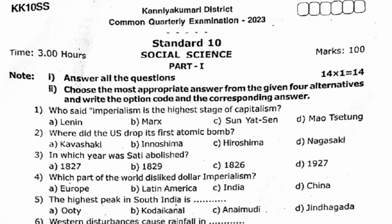Part 1, total of 14 marks. First question: who said imperialism is the highest stage of capitalism? Answer is option A. Next, where did the US drop its first atomic bomb? Answer is option C.